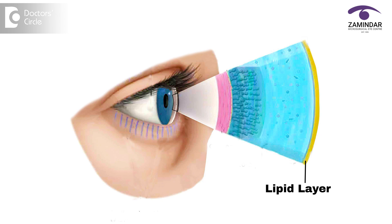The main function of the outer lipid layer is to retard evaporation. If there's a change or altered secretion of the meibum, it alters the outer lipid layer and there is excessive evaporation. This is one of the reasons for dry eyes.